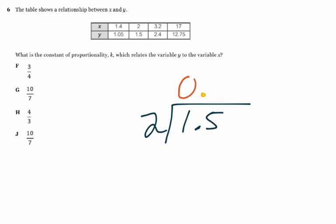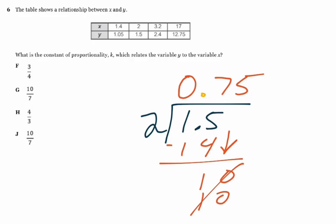2 does not go into 1. It goes 0 times. But 2 does go into 15. It's going to go in 7 times. 7 times 2 is 14. When you subtract, you get 1, and you've got to bring down this invisible 0. 2 goes into 10, 5 times evenly, and you get 0.75, which the fraction version of 0.75 is the same as 3 fourths. So the constant of proportionality k, which relates variable y to x, is going to be 3 fourths, 3 quarters, or 0.75.